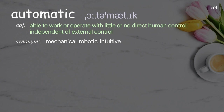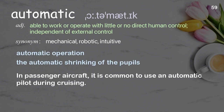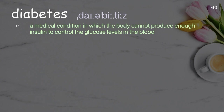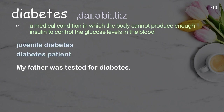Automatic: able to work or operate with little or no direct human control; independent of external control. Examples: automatic operation, the automatic shrinking of the pupils. In passenger aircraft, it is common to use an automatic pilot during cruising. Diabetes: a medical condition in which the body cannot produce enough insulin to control the glucose levels in the blood. Examples: juvenile diabetes, diabetes patient. My father was tested for diabetes.